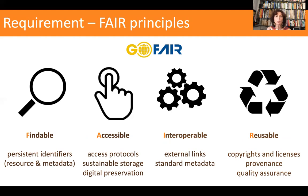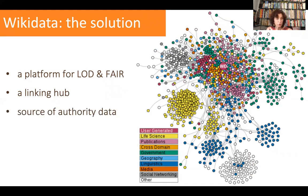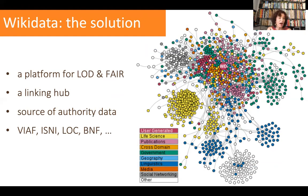Providing infrastructure for both linked open data and FAIR is quite expensive, so Wikidata could be a solution. It can serve as a platform for both linked open data and FAIR, and should be regarded as a linking hub. It is already used as a source of authority data, fed by providers such as the Library of Congress and the French National Library.